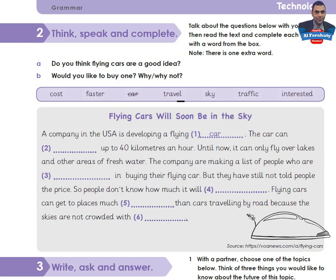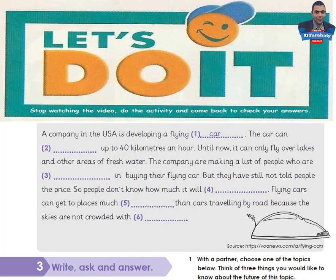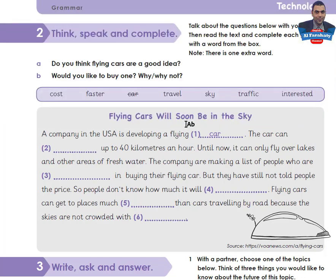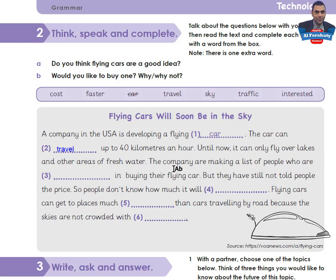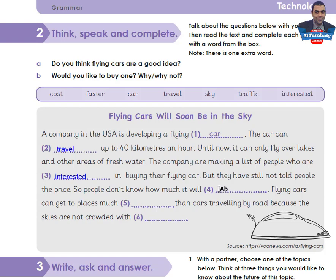Hello again. I'll complete the gaps to check your answers. The car can 'travel' up to 40 kilometers an hour. The company are making a list of people who are 'interested' in buying their flying car. So people don't know how much it will 'cost'. Flying cars can get to places much 'faster' than cars traveling by road because the skies are not crowded with 'traffic'.